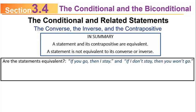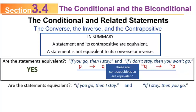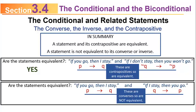Let's try some examples. Are these statements equivalent? If you go, then I stay — and if I don't stay, then you won't go. The first is of the form P implies Q. The second is of the form not Q implies not P, which is the contrapositive. So yes, these are contrapositive, and therefore equivalent. How about: if you go, then I stay — and if I stay, then you go? The second is of the form Q implies P, the converse. Converses are not equivalent, so the answer is no.